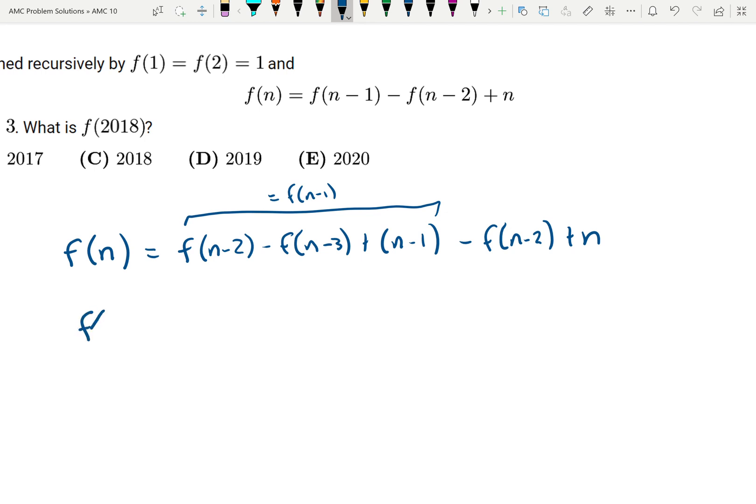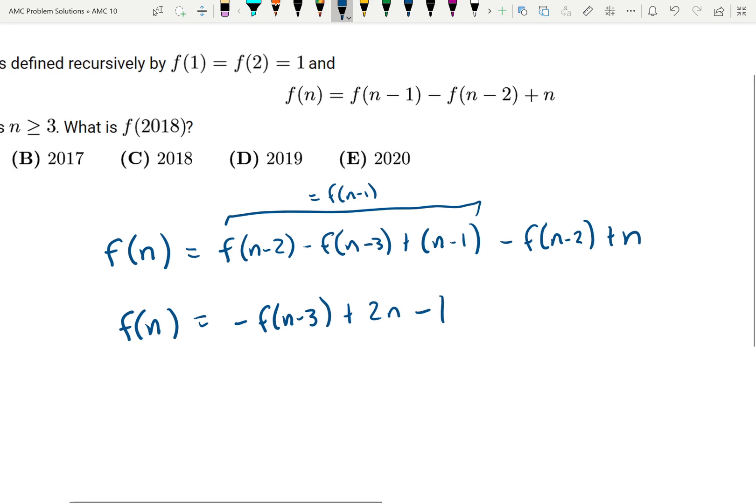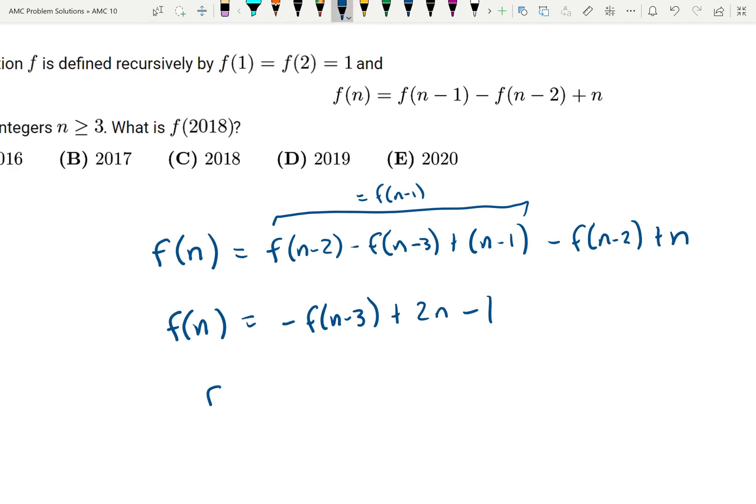So we get that f(n) is equal to -f(n-3) + 2n - 1. So rearranging stuff, we get that f(n) + f(n-3) is equal to 2n - 1.